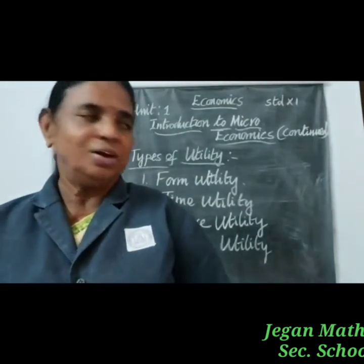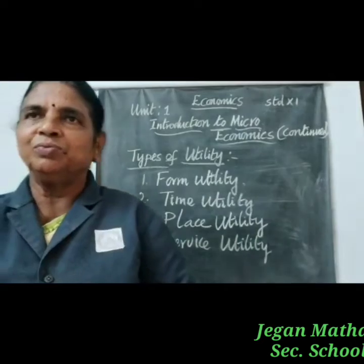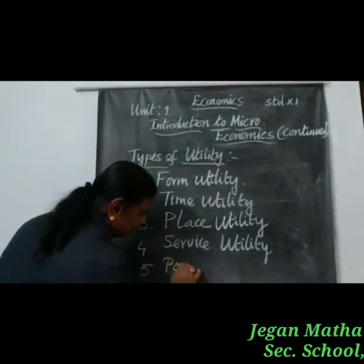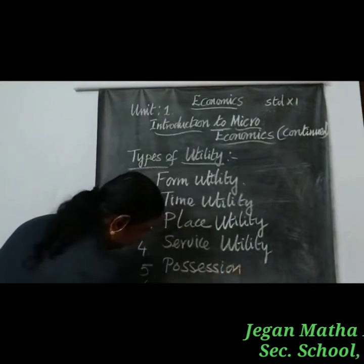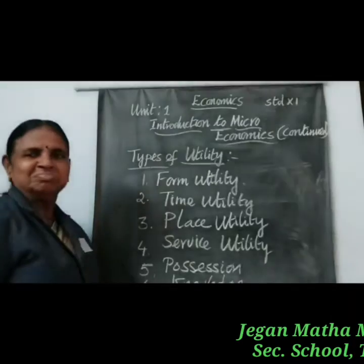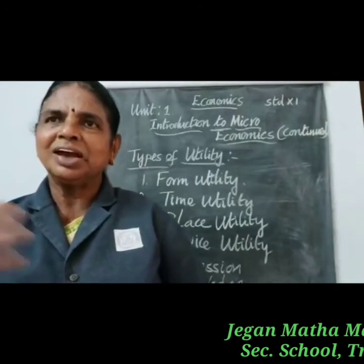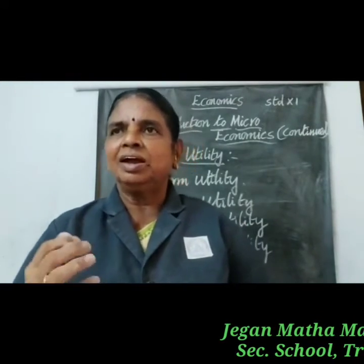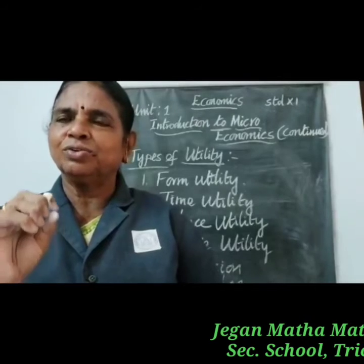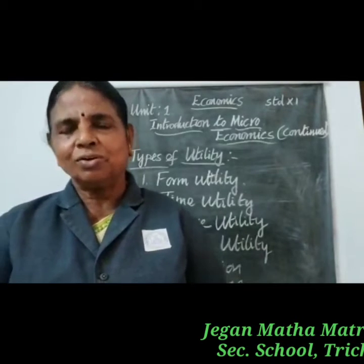The sixth type is knowledge utility. Knowledge obtained from an advertisement gives utility to us. It is the utility derived by having knowledge of a particular thing. An advertisement serves as a source of information on an object, and the utility gained from that information is called knowledge utility.